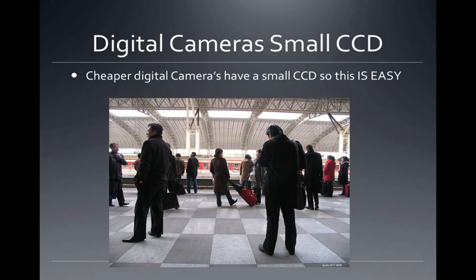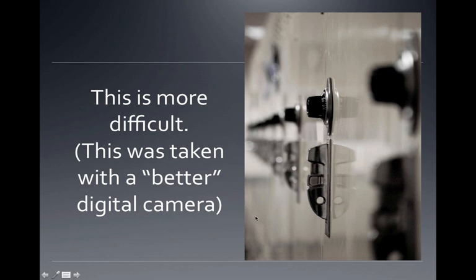Digital cameras with a small CCD — cheaper digital cameras — make it easy since everything's in focus. Easy to do on a point-and-shoot as long as you hold the camera steady. This other example is more difficult: just a very small part of the frame is in focus and everything else is out of focus. This is taken with a better digital camera that had more effect on depth of field. You'll also note the subject is pretty close — proximity affects depth of field too, making it shallower.